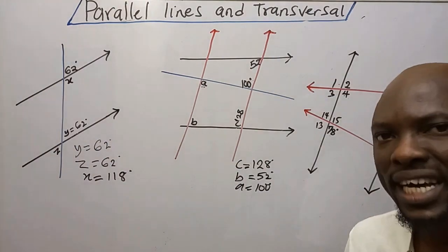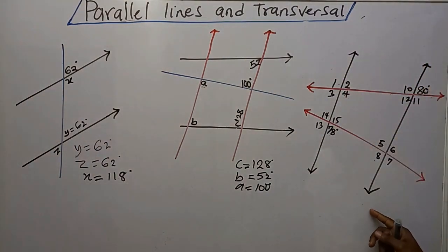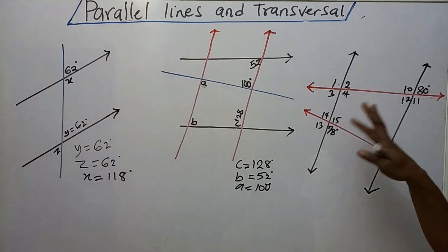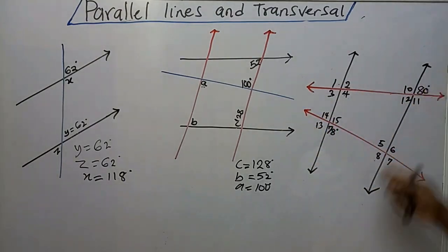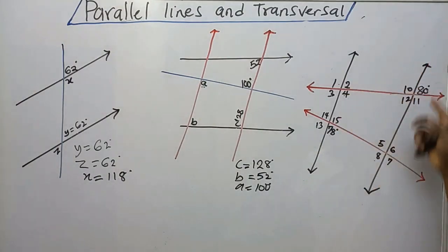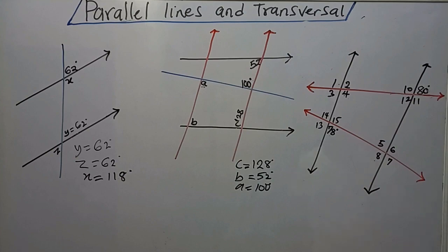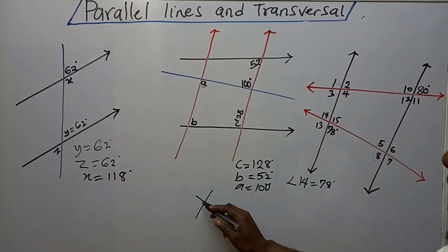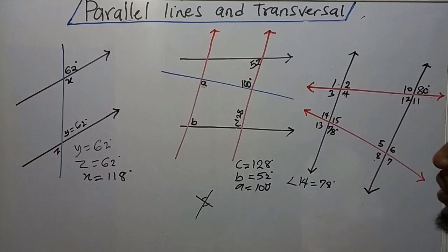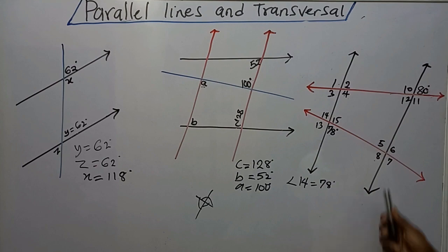Let's solve the last problem. In the last problem, these lines here are parallel, but these other lines are not parallel. I have two transversals to this parallel line. The first thing I want to look at is that these are intersecting lines, so angle 14 will be 78 degrees. The reason is vertically opposite angles — when you have intersecting lines, the angles apart are vertically opposite and congruent.